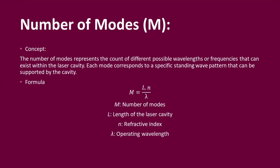The second definition is number of modes, m. The number of modes represents the count of different possible wavelengths or frequencies that can exist within the laser cavity. The formula is m equals L multiplied by n divided by lambda, where L is the length of the laser cavity, n is the refractive index, and lambda is the operating wavelength. Number of modes is inversely proportional to operating wavelength — if the operating wavelength is high, the number of modes is less.